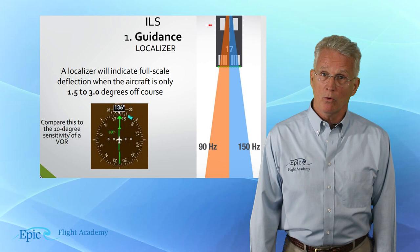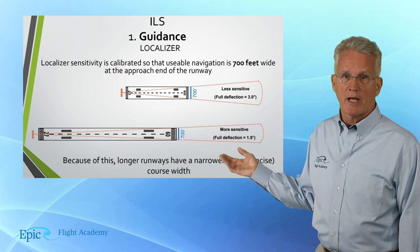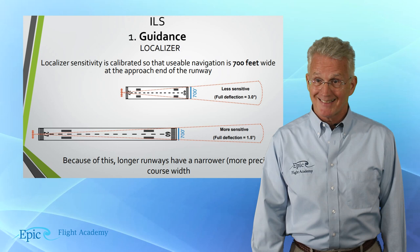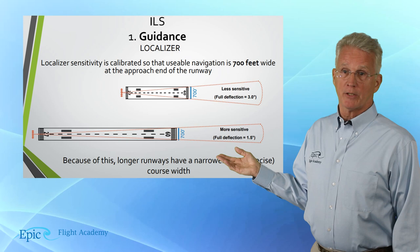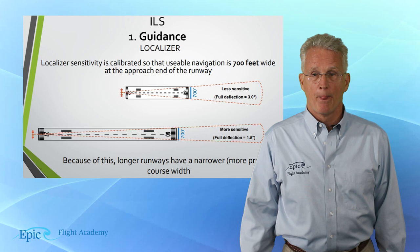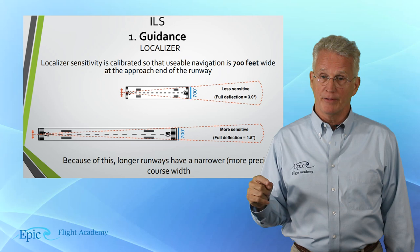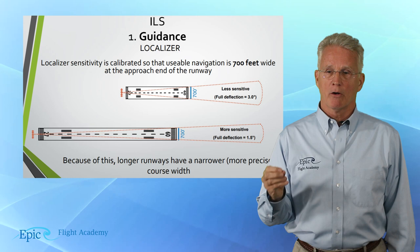Looking at these diagrams, you can see that the sensitivity is calibrated so that usable navigation is 700 feet wide at the approach end of the runway. So for shorter runways it's less sensitive. For a full approach end of the runway it's also 700 feet, but because of that longer runway it has a narrower and more precise course width.